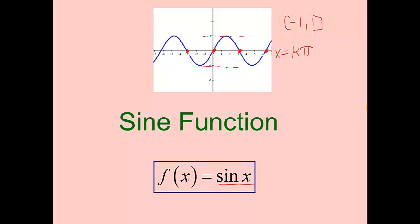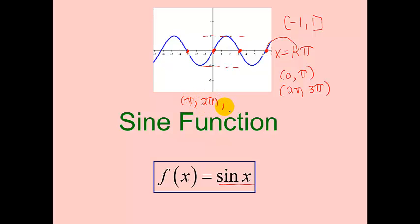The intervals where sine is positive are from zero to pi, then again from two pi to three pi, and so forth. The intervals where it's negative are from pi to two pi, then again from three pi to four pi, and so forth. For the end behavior, as x approaches infinity or negative infinity, this function will continue to oscillate between one and negative one — it does not approach a specific value.